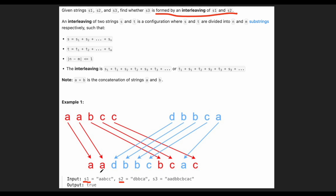For example, let's say S1 is A, A, B, C and S2 is D, B, B, C, A. We take the first two characters from S1, then the next four characters from S2, then the next three characters from S1, one character from S2, and one last character from S1 — forming this string by interleaving S1 and S2.